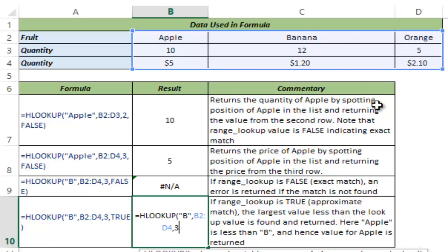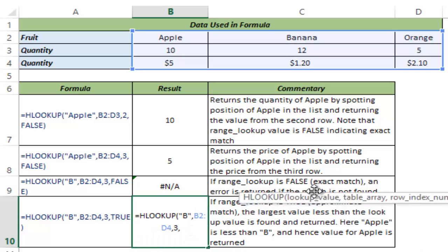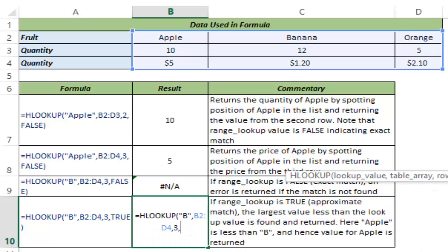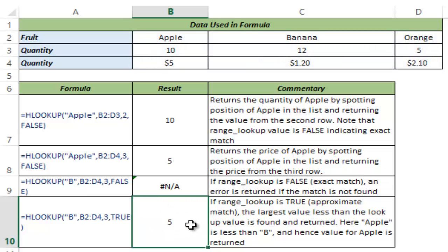Row index number I use 3 and instead of false I need to use true. So this is the range lookup. I would type 1 instead of 0 or I can manually type true and I hit ctrl enter.